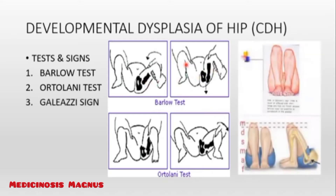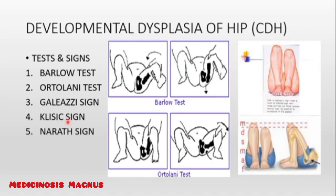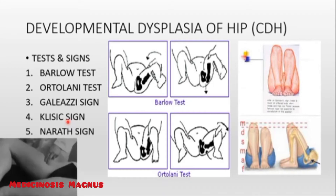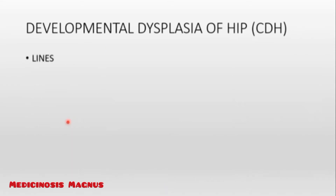Galeazzi sign: when you flex the hip, the knees are not at equal heights. On the side with DDH, the knee will be slightly lower in height than the normal knee. Classic sign is used for bilateral DDH — if both sides have the problem, both will look equal and normal. We also have the vascular sign of Narath: normally the femoral pulse is palpable, but in DDH it is not palpable.